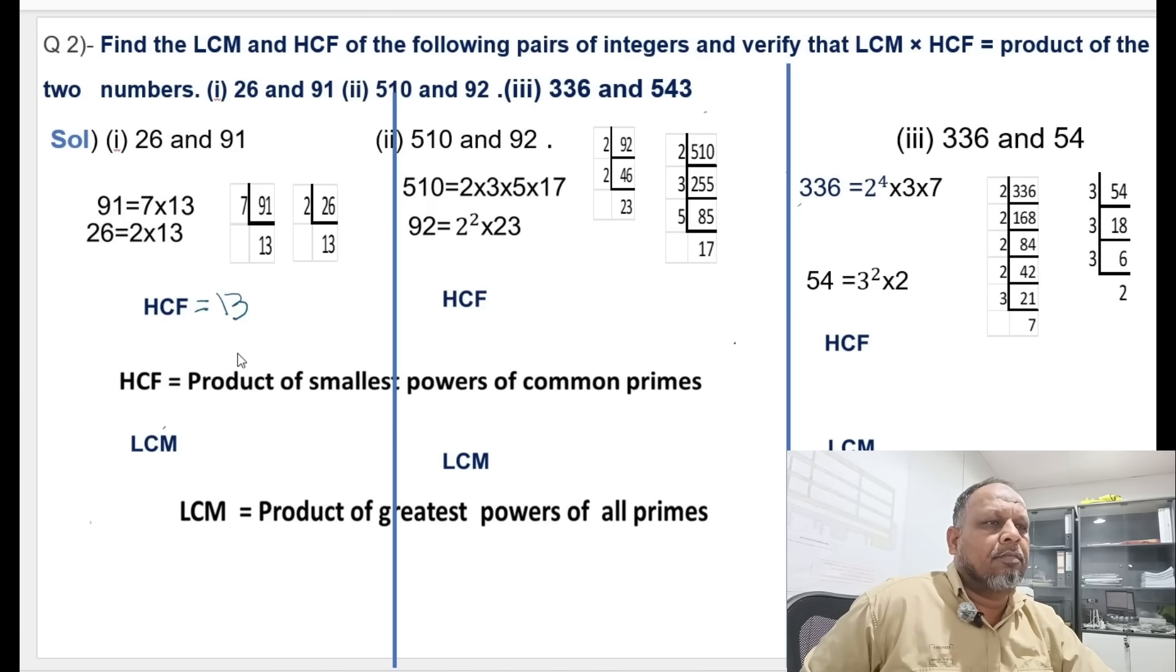For LCM you've got 2, 7, and 13. For LCM you have to multiply all three because LCM is a product of the greatest powers of all primes. So this equals to 14 into 13 is equals to 182.